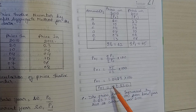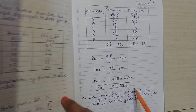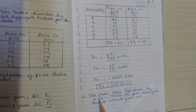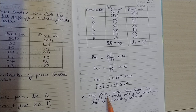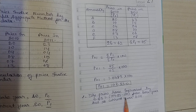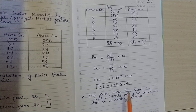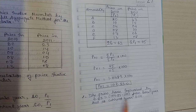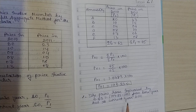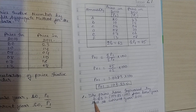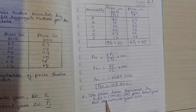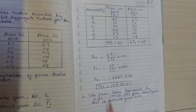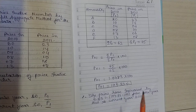The conclusion is that the price index number using the simple aggregative method is 104.83%. This means prices have increased by 4.83%, since the base period is always considered as 100, and 104.83 minus 100 equals 4.83%. From the base year 2010 to the current year 2011, prices increased by 4.83%. We use index numbers to calculate the rate of increase or decrease in prices.